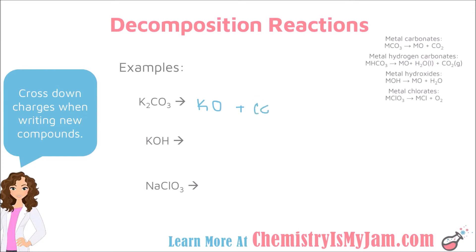So I can predict that it is going to be KO plus CO2. However, I need to check the charges on that potassium oxide. Potassium has a charge of plus 1 and oxygen has a charge of minus 2, so those charges are going to need to get crossed down to give me K2O. The last thing you would want to do is make sure that the reaction is balanced. One nice thing about the metal carbonates is that your reaction should always be balanced in the fashion in which they break down, but it is a good idea to check.